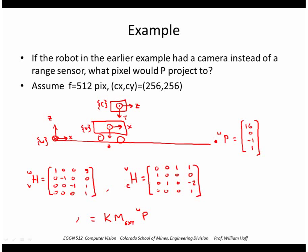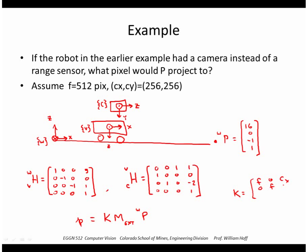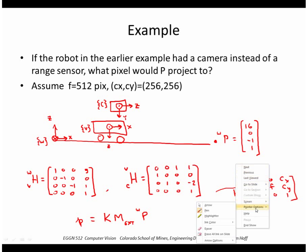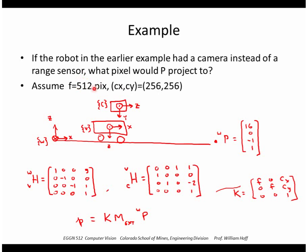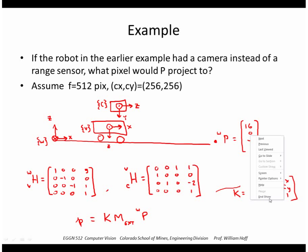We need to construct K. K remember was f, 0, 0, cx, 0, f, cy, 0, 0, 1, 0, 0. So here we have cx, cy and we know f is 512. So let's go ahead and put that into MATLAB.